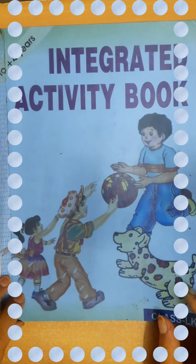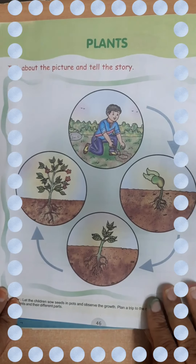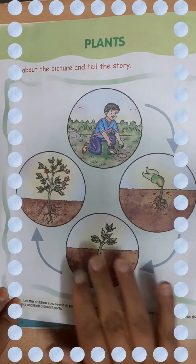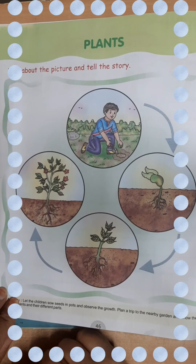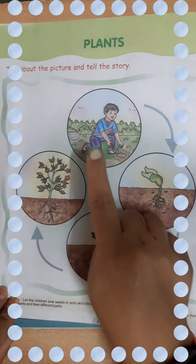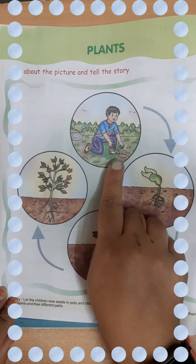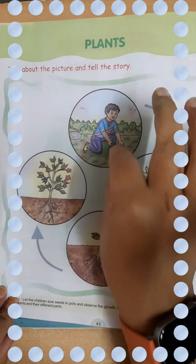Now let's come back to our integrated activity book and do page number 44. Now dear students, this is our integrated activity book. As I have told you about plants, look what this boy is doing here. Now you know how the seed grows. First of all, what did this boy do? He planted a seed — he planted one seed.